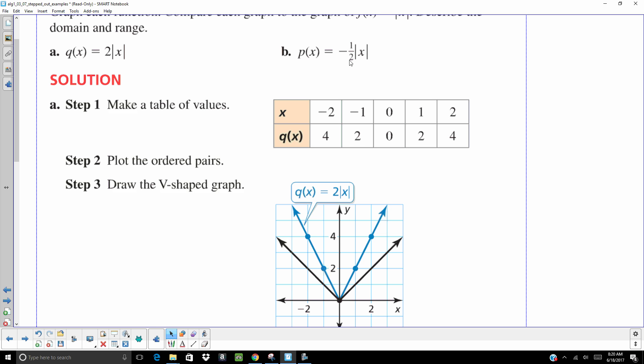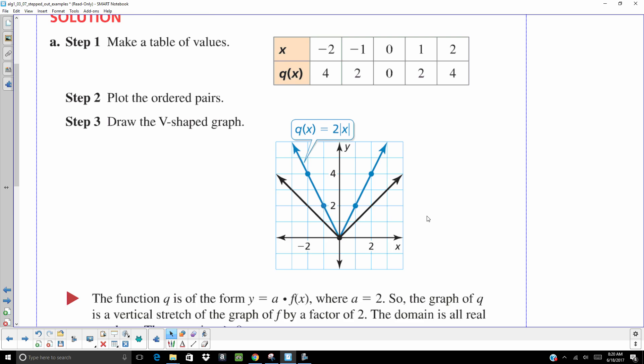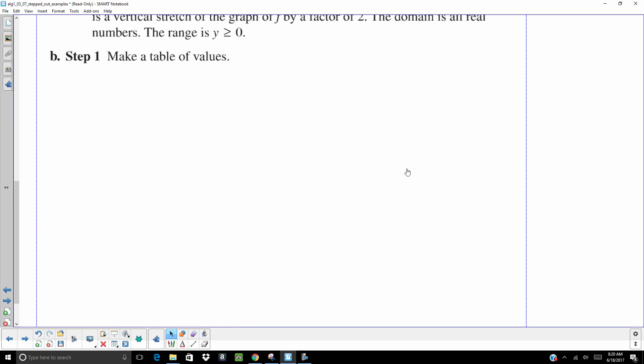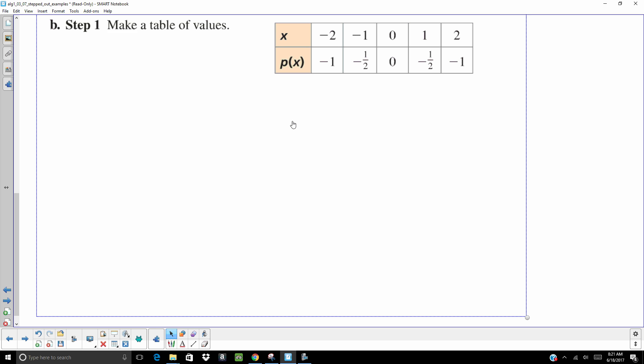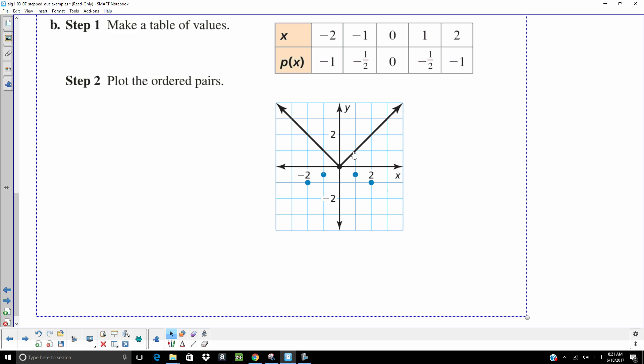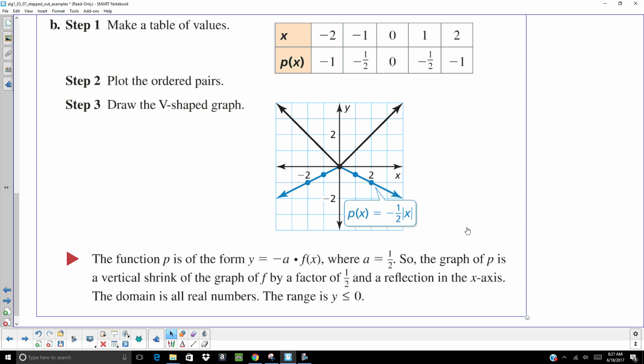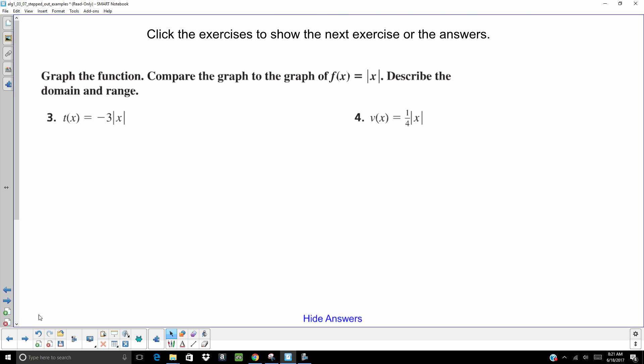For part B, we have a negative one half in front of that X. So there's two things. We have a fraction and we have a negative sign. Let's see how that affects it. So we're going to make a table. Plug those values in, get an output. So here's our parent function. I plot it. Well, that negative sign flips it over the X axis because that one half is less than one. It's shrinking the graph by a reflection, by a factor of one half. The slope is also negative one half, positive one half. Try these two on your own when you think you have the answer. Hit play and check yourself.